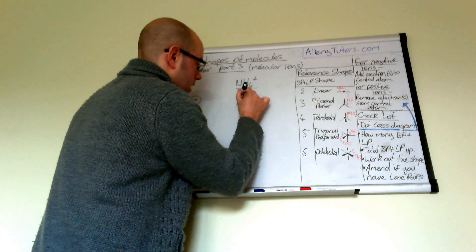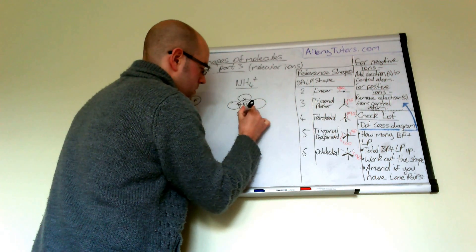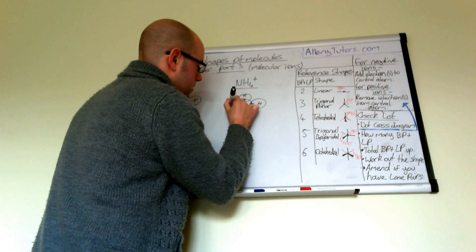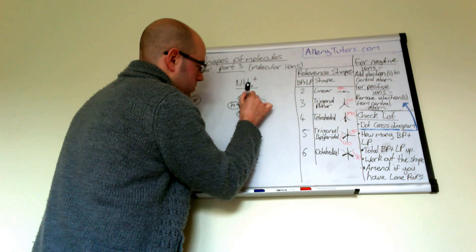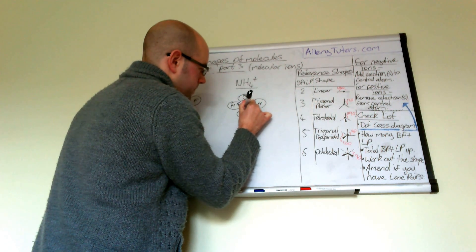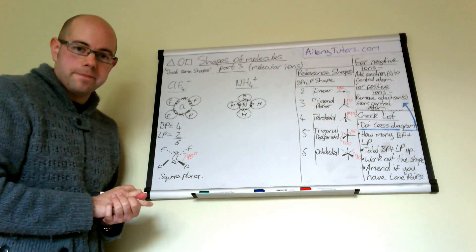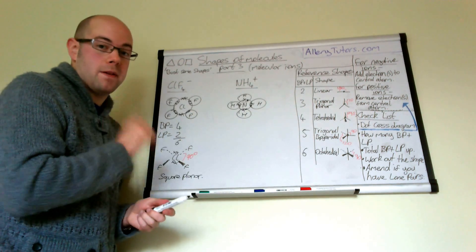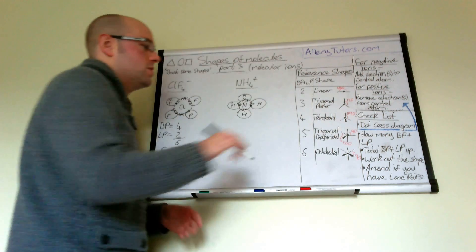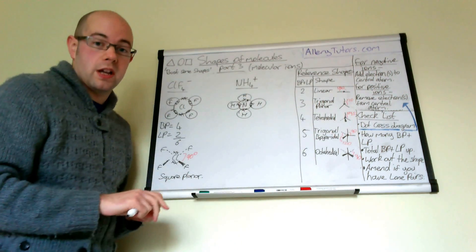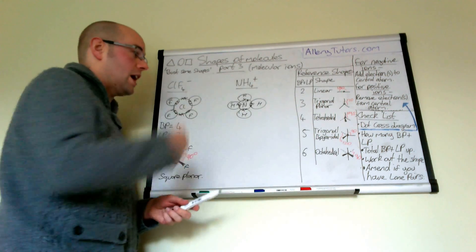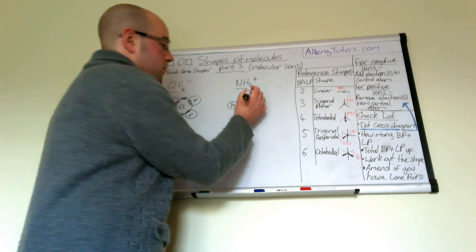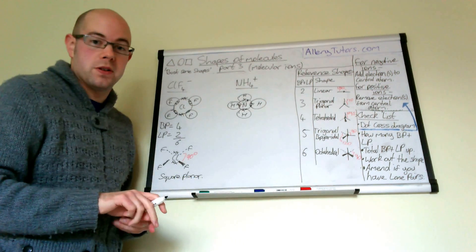We're going to add our hydrogens in there as well — there are our hydrogens — and they're going to share an electron. Now this is obviously just for diagrammatic purposes, just purely to work it out. Chemically, it doesn't actually work quite like this because in NH4⁺ one of the bonds is actually a dative covalent bond.